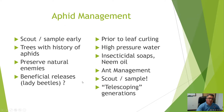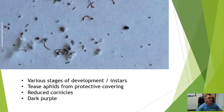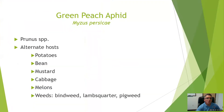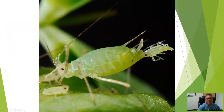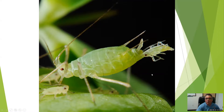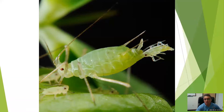Regarding telescoping generations: this is a female — also called a stem mother — and they give birth to live young. Here is a newly birthed nymph of the aphid. Inside her body is an immature aphid, and if one were to dissect this animal in cross-section, you would find the young inside her — and inside that developing aphid is another developing aphid. Hence the name 'telescoping generations,' which really leads to the biotic potential of aphids to develop large populations in a very short period of time.